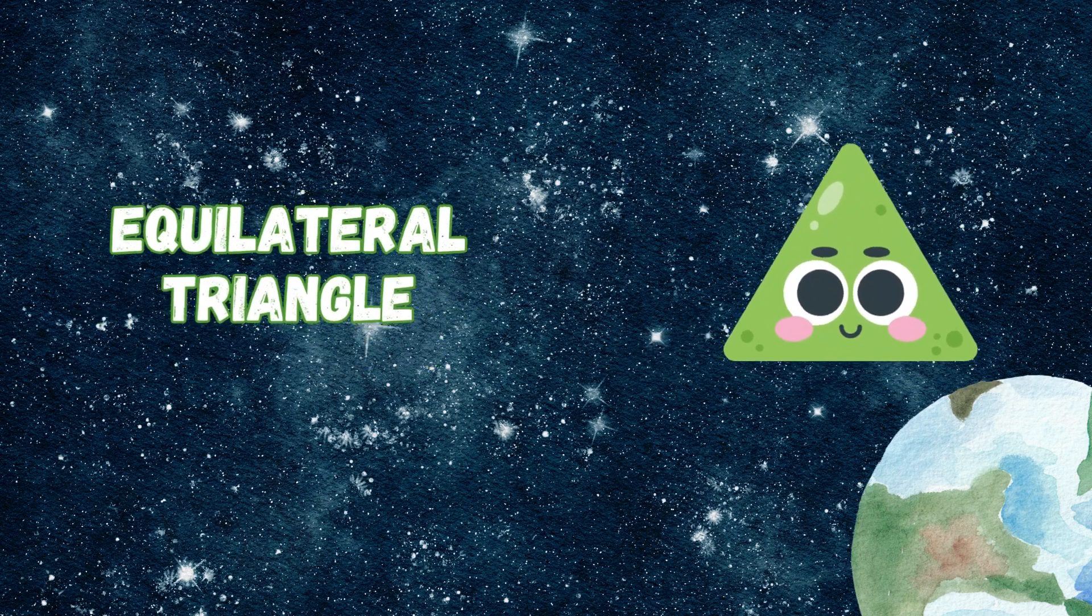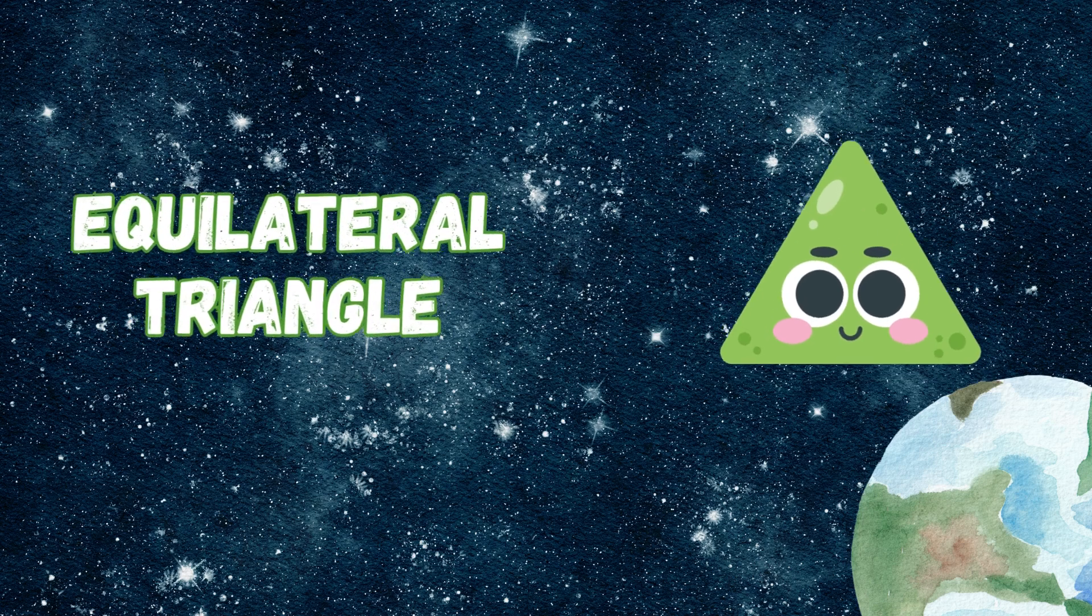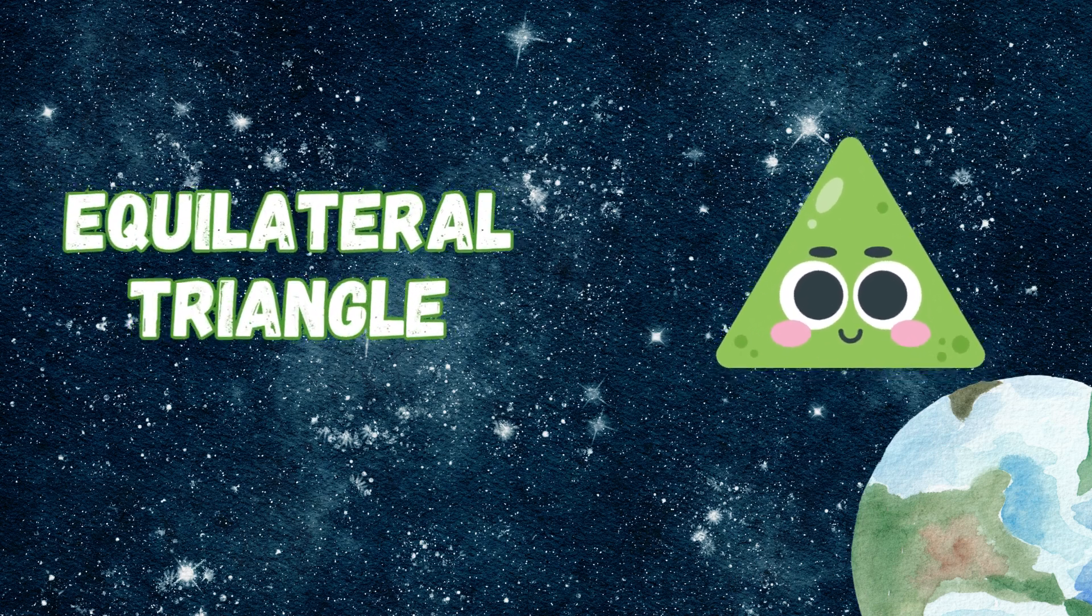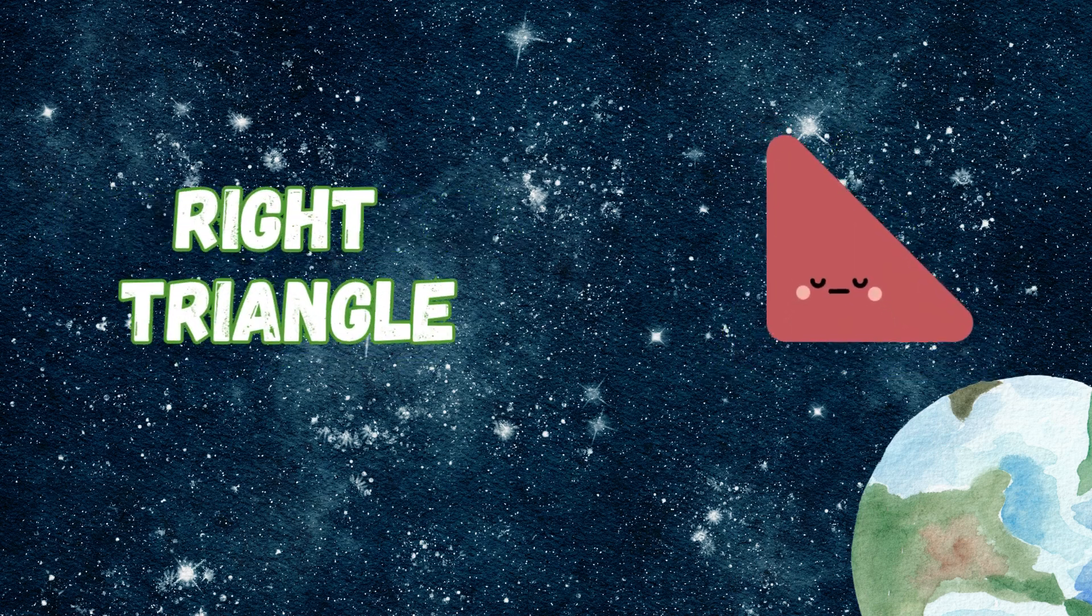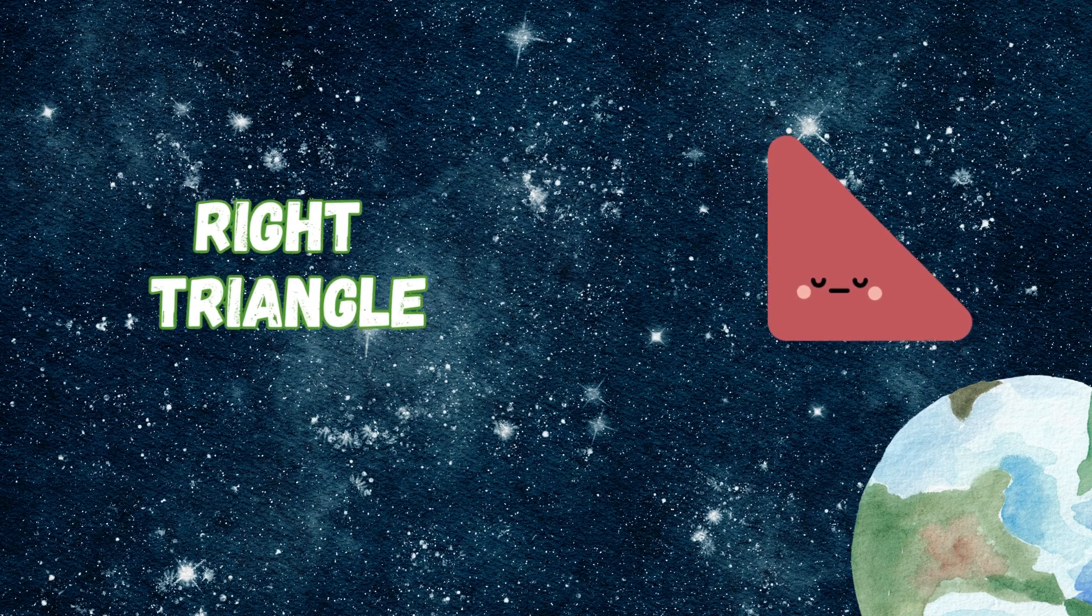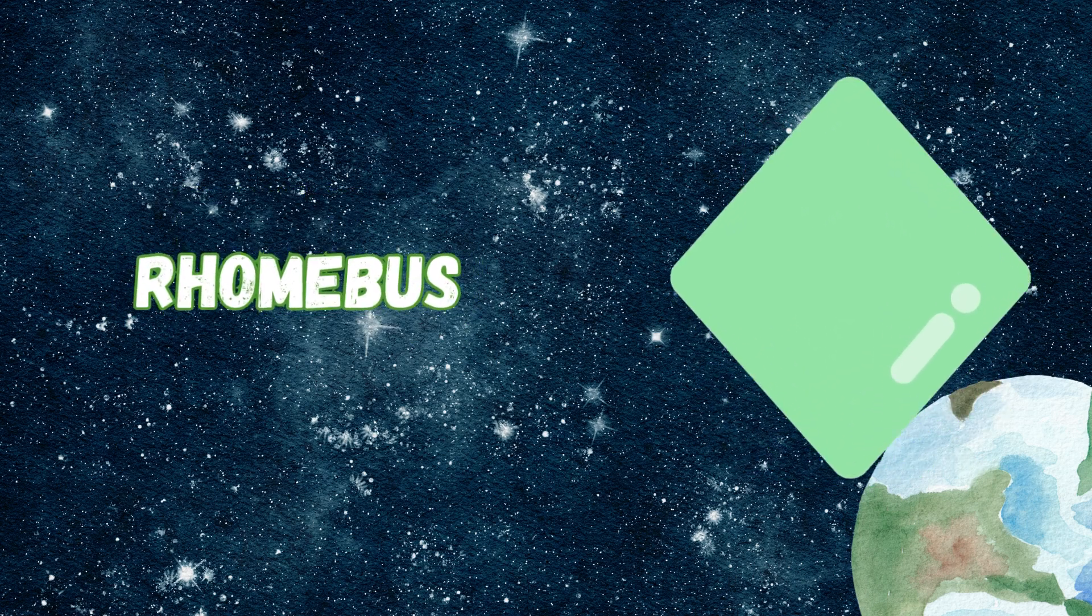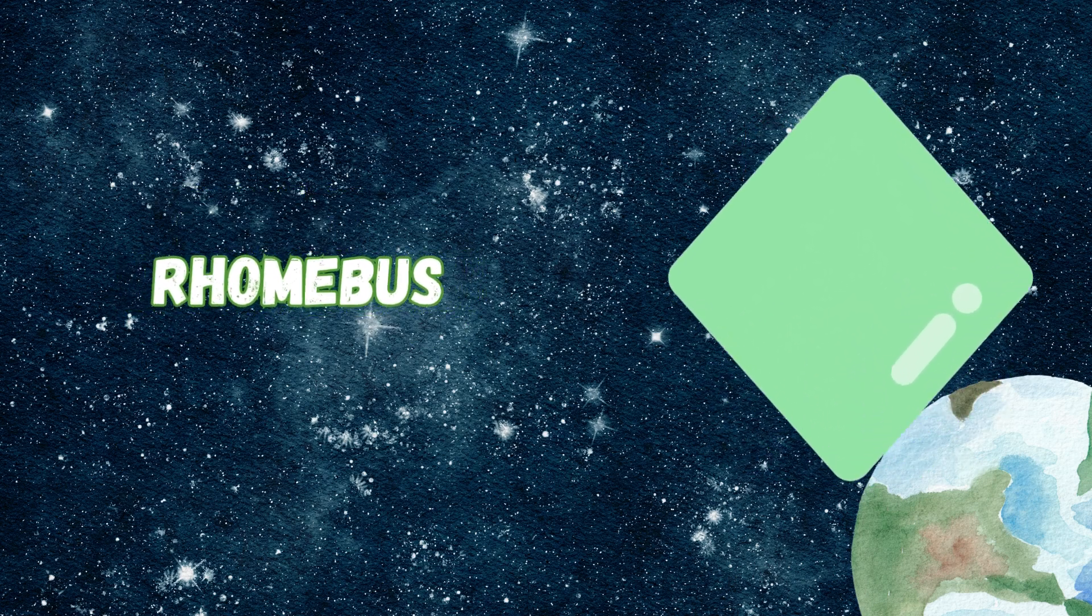Equilateral sides are all the same. A perfect triangle earns its fame. Right triangle with an angle square, a straight corner is always there. Rhombus leans, the sides are four. It looks like a diamond and much more.